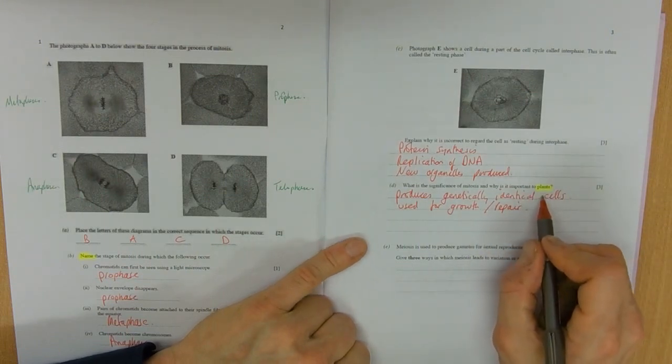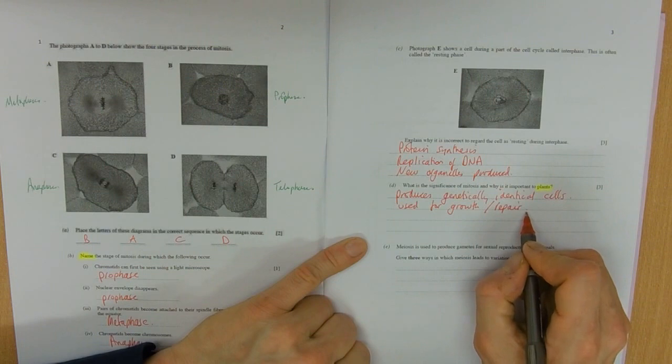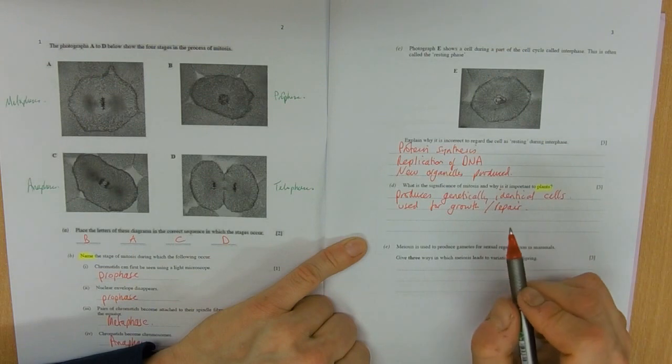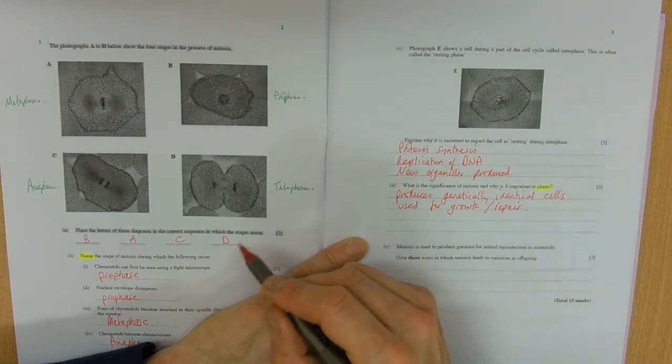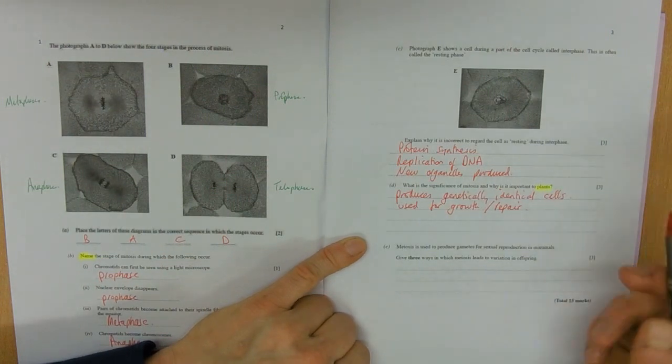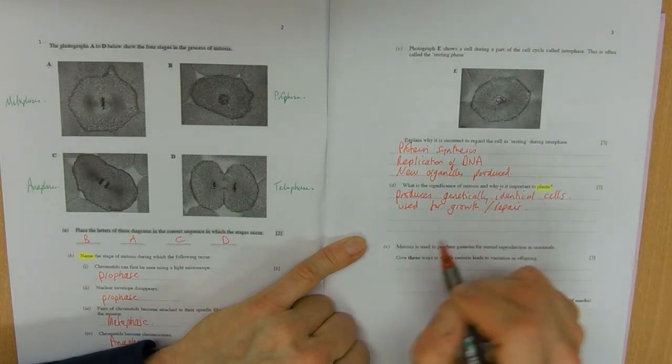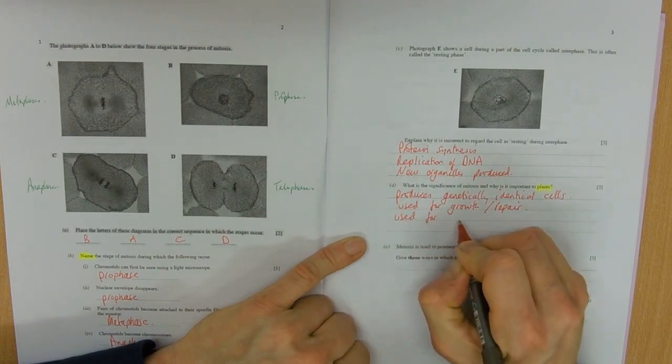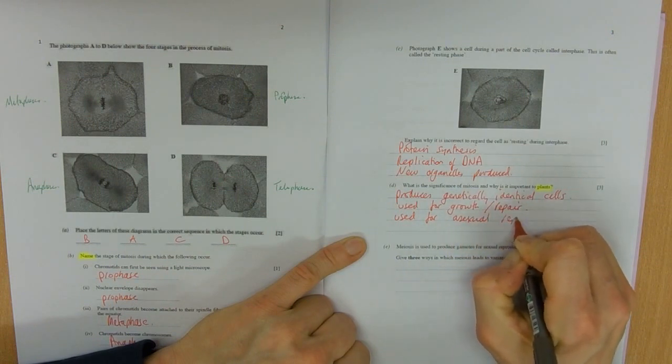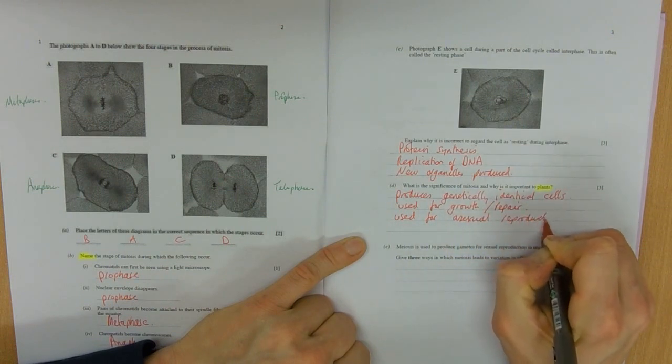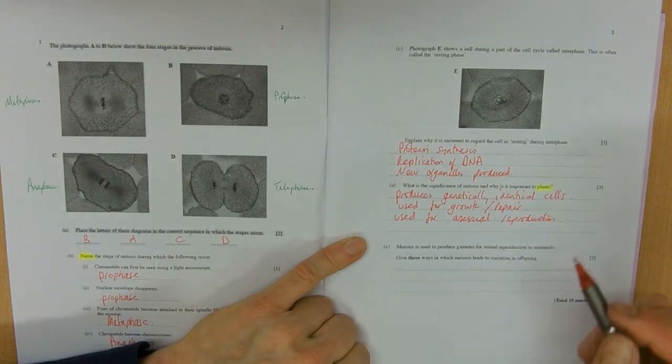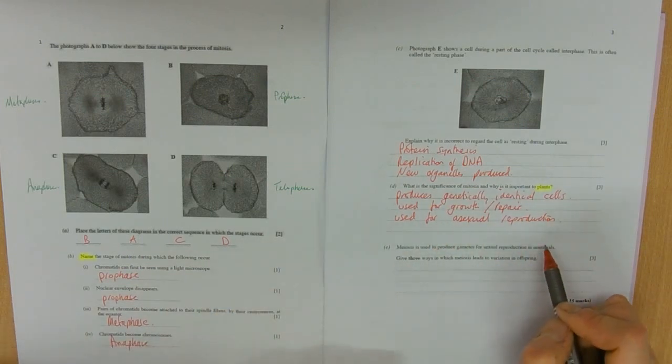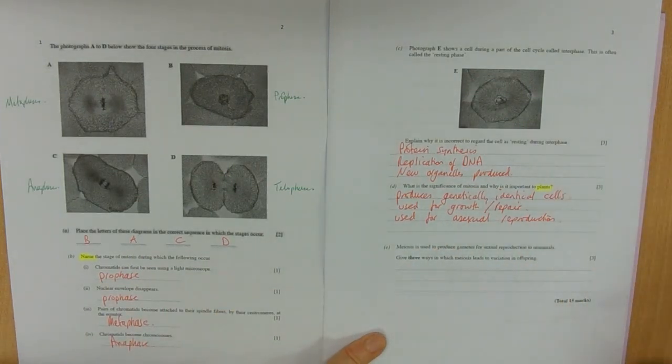And then in plants, this is often a method of asexual reproduction. So for example, plants like strawberries would send out runners and become drop a little baby plant somewhere else. So it could be used for asexual reproduction. Those are our three there, and we could have named an example for a mark as well, but those are the three definite things that you should have said.